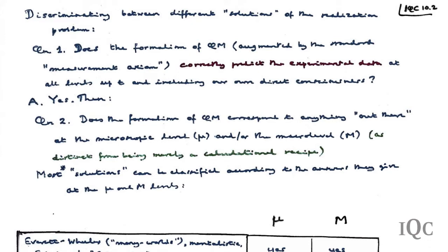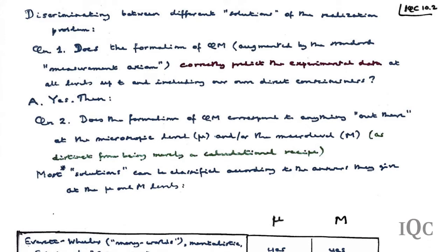Second question: do you believe that the formalism of quantum mechanics actually corresponds to something real—at the microscopic level μ or at the macroscopic level m? Is quantum mechanics something more than simply a calculation recipe? More than a set of symbols on a piece of paper which you write down hoping to predict correct experimental outcomes? You can classify most alleged solutions to the quantum measurement problem according to how they answer those questions—first at the microscopic level and then at the macroscopic level.